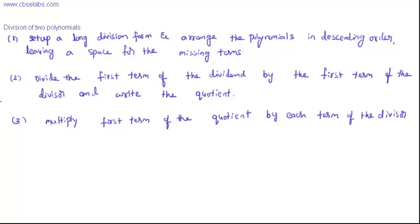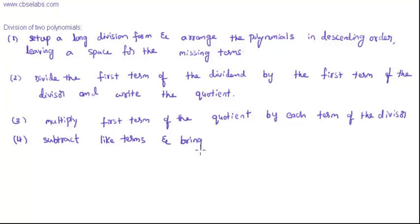The fourth step is: subtract like terms and bring down all the other left terms.